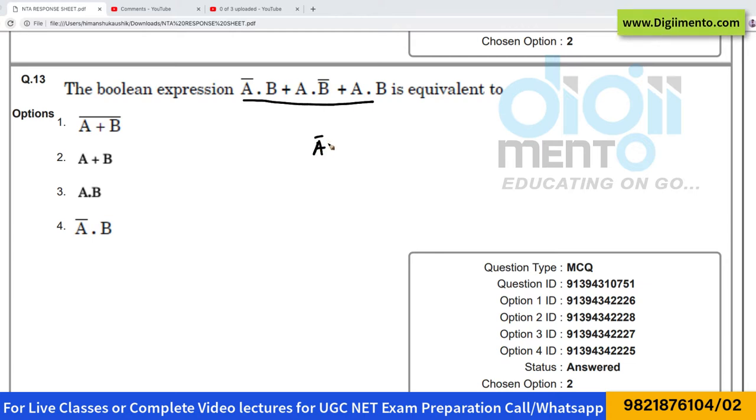The expression is: A̅·B + A·B̅ + A·B. They are asking which of the following this expression is equivalent to. Now, instead of distributing, let us take common terms from these two expressions first.